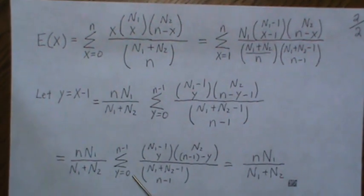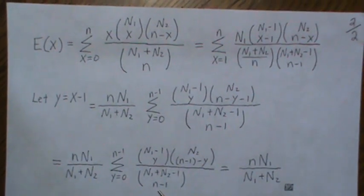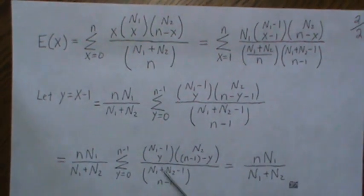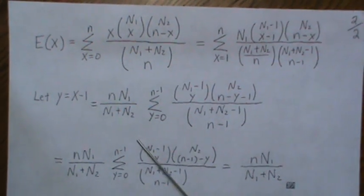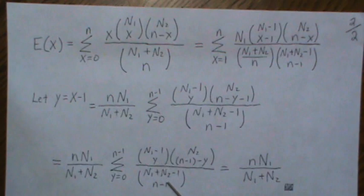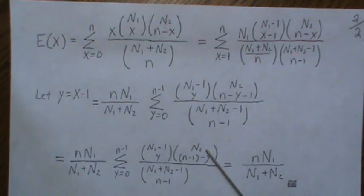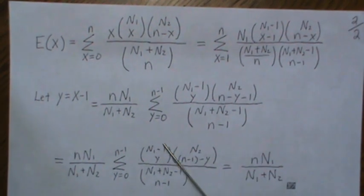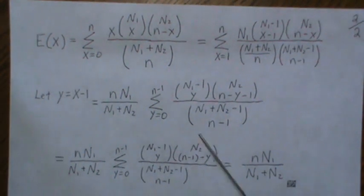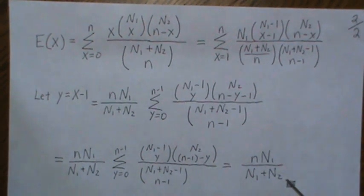But here we go from 0 to N minus 1. And it looks like our sample size is N minus 1. So this is another hypergeometric distribution with the sample size N minus 1, and the population size for population 2 is N2, and the population size for N1 is N minus 1. So this sums to 1, leaving only the front out here. So this is the mean of hypergeometric distribution.